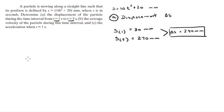Part B is the average velocity during this time interval. Average velocity is given by the displacement over the time elapsed, so ΔS over ΔT.